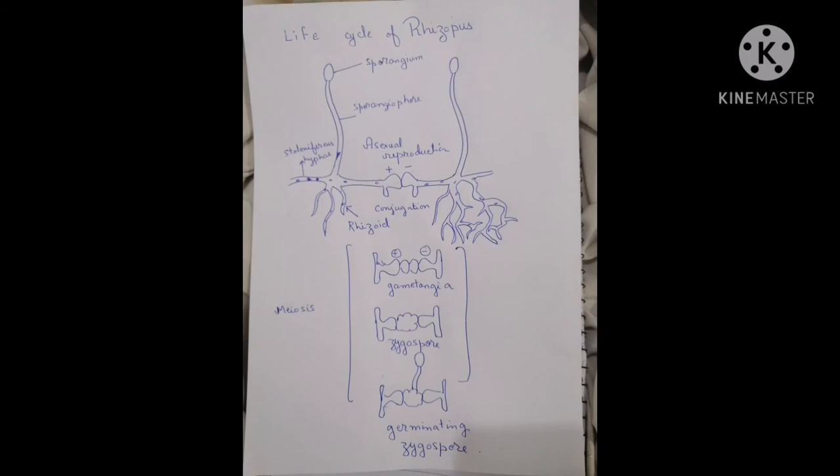First of all, gametangia form. What is gametangia? A specialized organ which produces gametes is known as gametangia. Gametangia produces gametes which is known as zygospore. The zygospore germinates to produce a new hyphae.